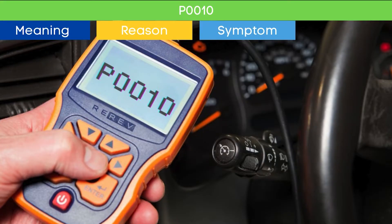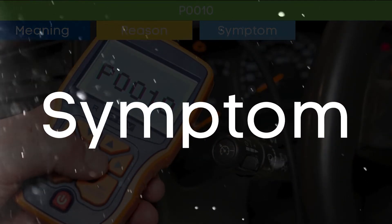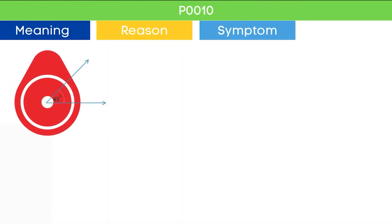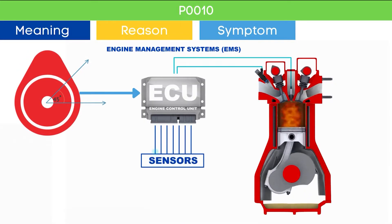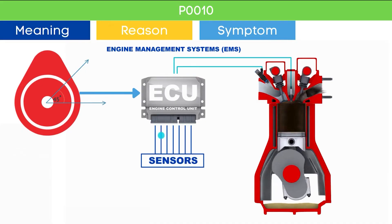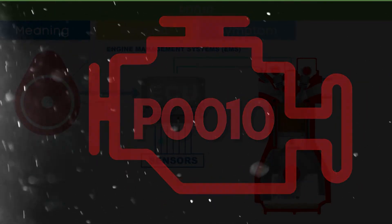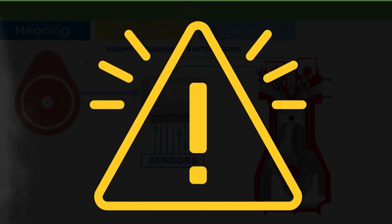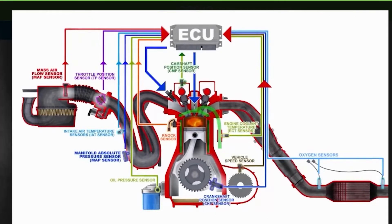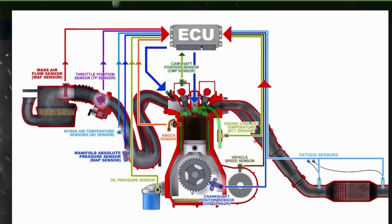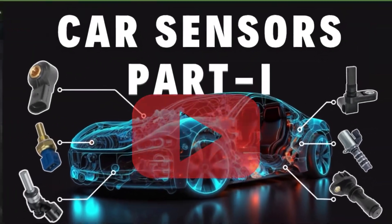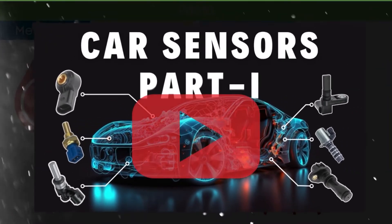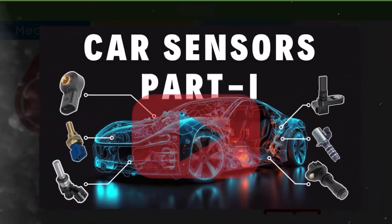Now that we know what the P0010 OBD2 code is, let's dive into the symptoms of P0010. Cam angle is a very crucial parameter in engine management systems to optimize the engine's performance. Due to the P0010 code, there may be an issue in engine performance. Cam angle is only one of several engine management parameters used by the ECU, which also relies on other EMS sensor inputs. To learn more about sensors of the engine management system, you can check our detailed video on car EMS sensors — check the link in the corner.